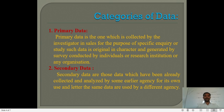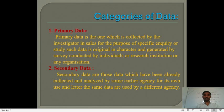Data is categorized into two categories: first, primary data, and second, secondary data. These are also called the types of data. Primary data is that which is collected by the investigator for the purpose of a specific inquiry or study. Such data is original in character and generated by surveys conducted by individuals, research institutions, or organizations.